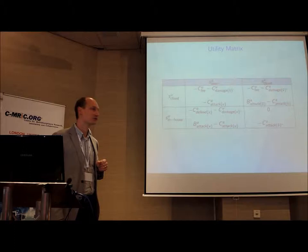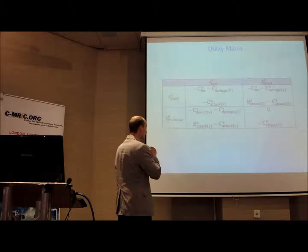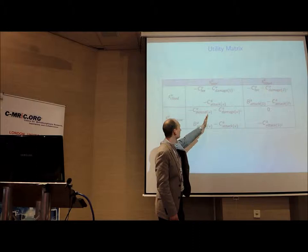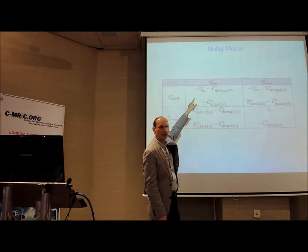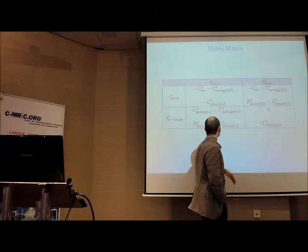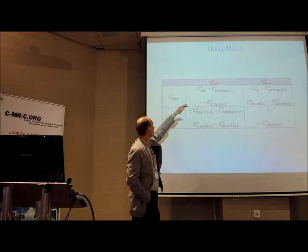So now this rather horrible matrix here defines our game. Because basically what it says is for each row and each column you have the different actions. For example, this column here is the strategy where the attacker attacks the user. This column is where the attacker attacks the cloud. And this row is where the user keeps the assets in-house.